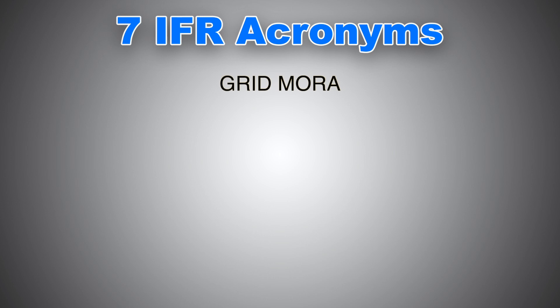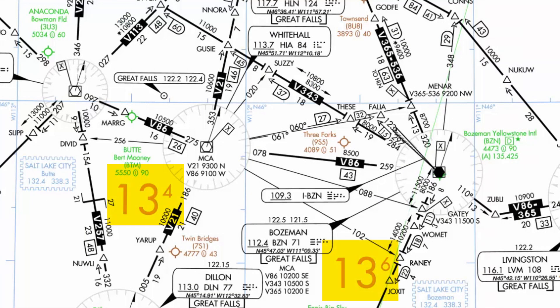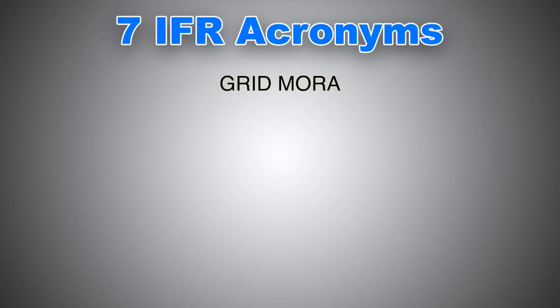Grid MORAs provide obstacle clearance within a latitude and longitude grid block, usually one degree by one degree. They are presented in feet, omitting the last two figures — for example, 7,600 feet is given as 76. Grid MORA values clear all terrain and obstructions by 1,000 feet in areas where the highest elevations are 5,000 feet MSL or lower, and by 2,000 feet in areas where the highest elevations are above 5,000 feet MSL.